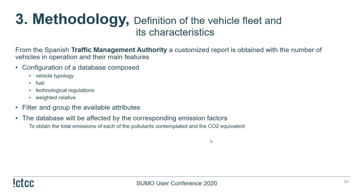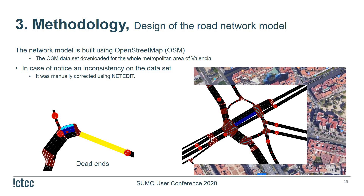For the road network model design, the network was downloaded from OpenStreetMap for the whole metropolitan area of Valencia. The graphic representation was reviewed and any inconsistencies in the dataset were manually corrected using NetEdit — for example, changing the number of lanes at dead ends from four lanes to continue in four lanes.